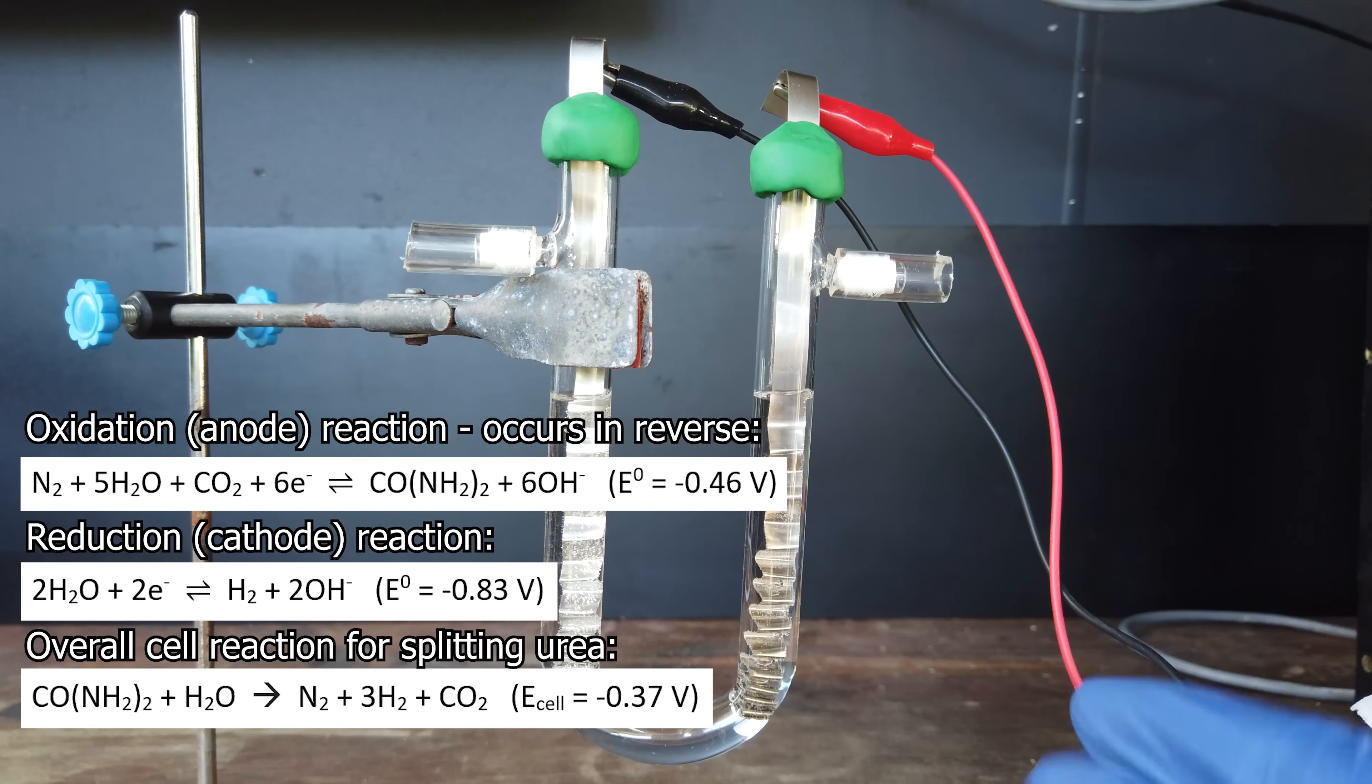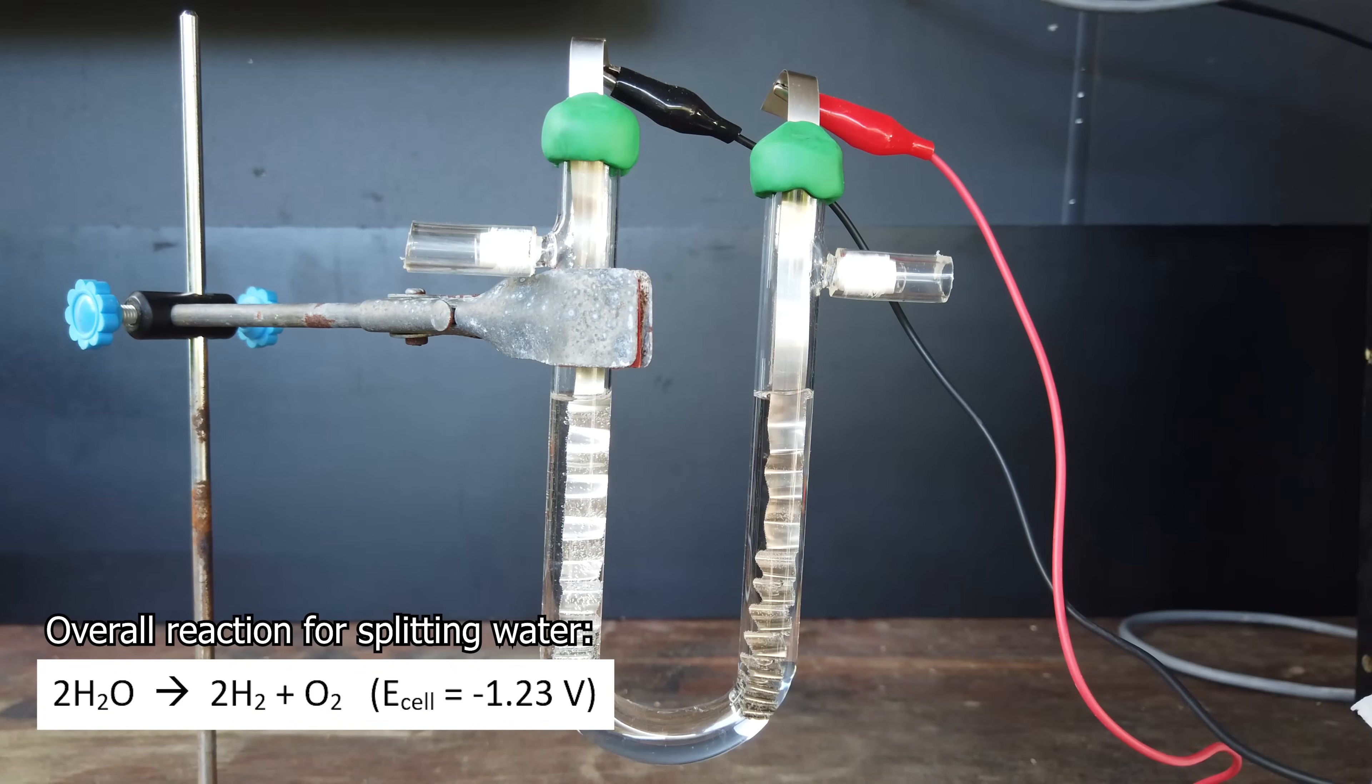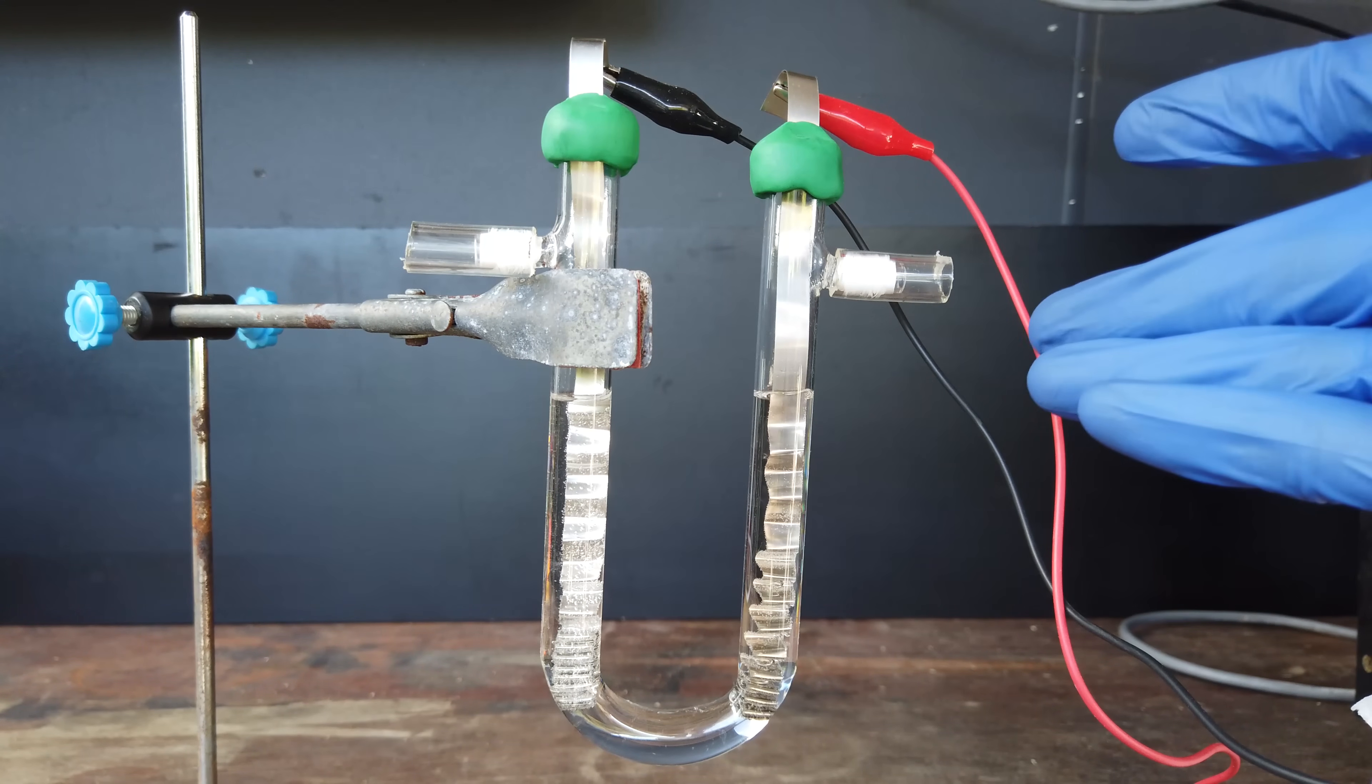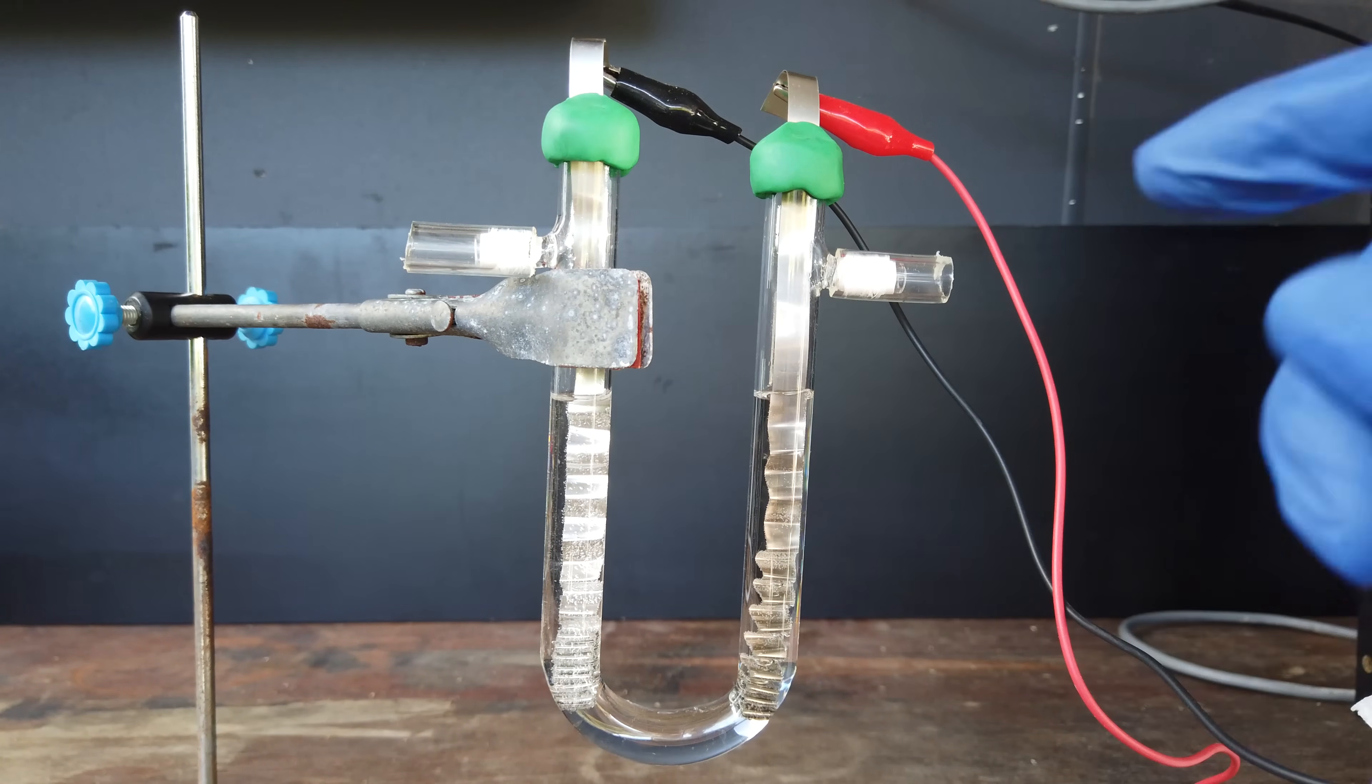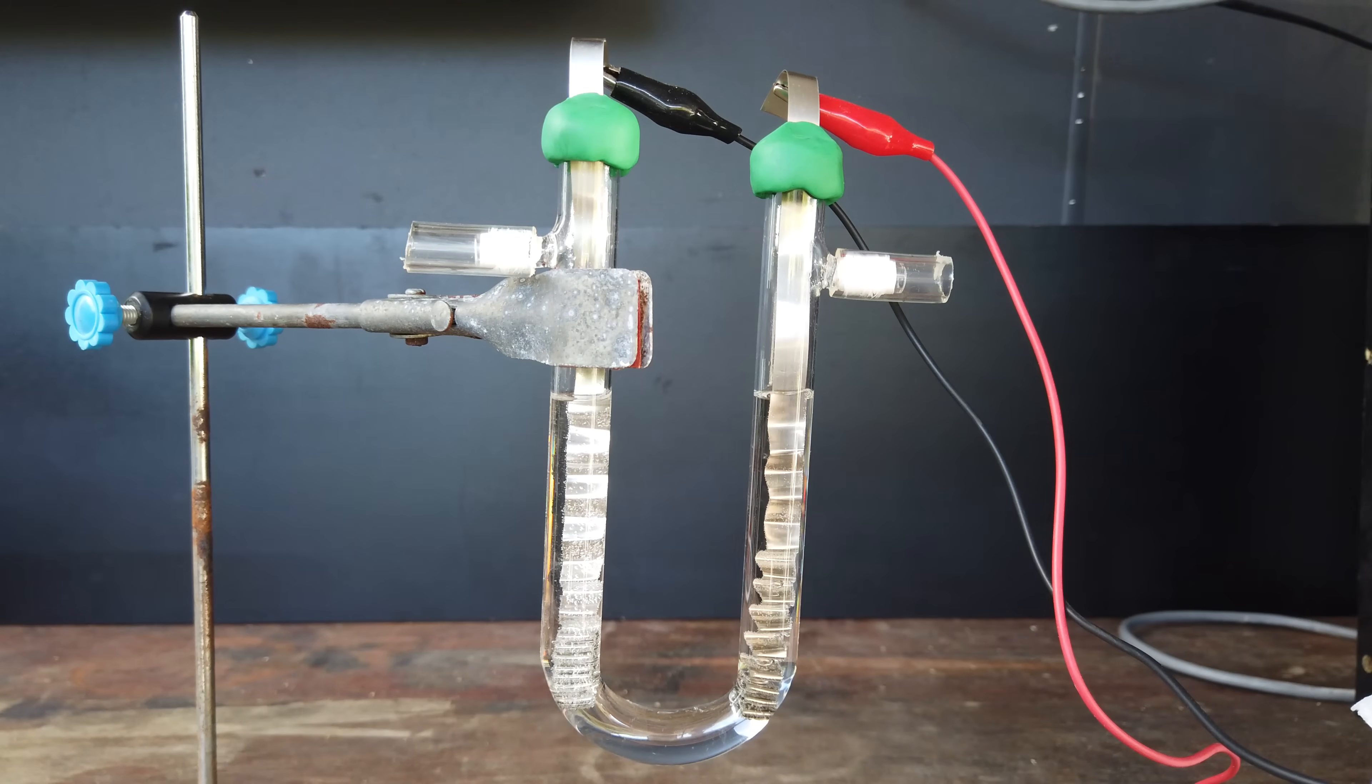The electrochemical splitting of water occurs at around 1.23 volts. So the basic gist of it overall is that on nickel electrodes, urea can be split electrolytically by voltages between 1 and 1.5, whereas above 1.5 volts, we start to get electrolysis of water occurring, and instead of generating exclusively nitrogen gas, we start to generate oxygen alongside that.